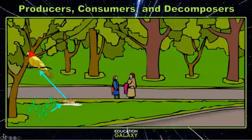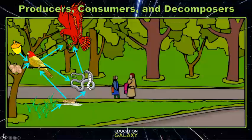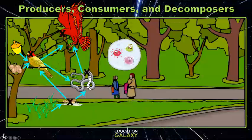Let's say the finch also eats nuts from the trees, and maybe a snake comes along and eats some crickets, but also eats our bird friend. And maybe there's a hawk circling around that also eats birds and snakes. And then when all of these organisms die, their bodies are broken down and decomposed by bacteria, worms, and fungi. Now what we've made is a food web, which is a network of food chains that follow the flow of energy in an ecosystem.